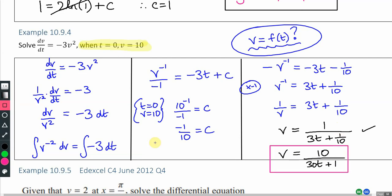That was if the question had said give your answer in the form v equals. If it doesn't specify what form to give your answer in, then this line here, we had full marks there. But very important algebra steps at the end in case the question wants answer in a particular form.